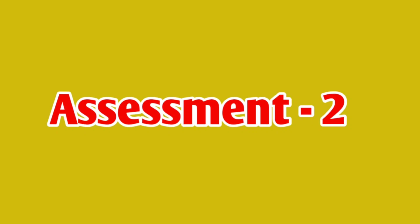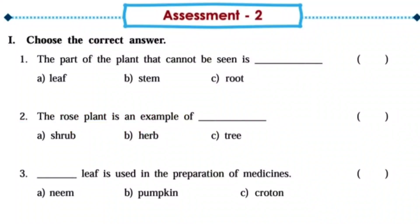Next assessment two: Choose the correct answer. The part of the plant that cannot be seen is - Answer C root. The rose plant is an example of - Answer A shrub. Dash leaf is used in preparation of medicines - Answer A neem.